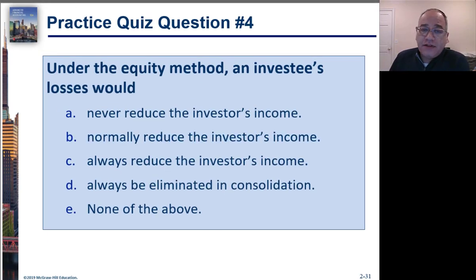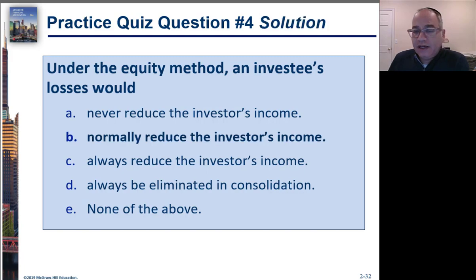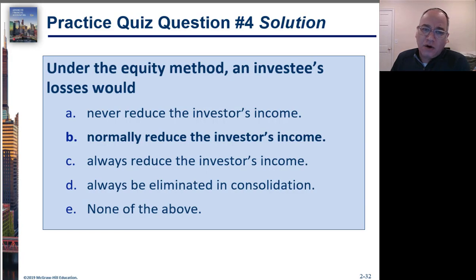Under the equity method, investee losses would — A. Never reduce the investor's income, B. Normally reduce the investor's income, C. Always reduce the investor's income, D. Always be eliminated in consolidation. The answer is B — normally reduce the investor's income. The reason it's not 'always' is because if losses brought the book value below zero, you can't reduce the investment below zero. But that's a fairly obscure situation.